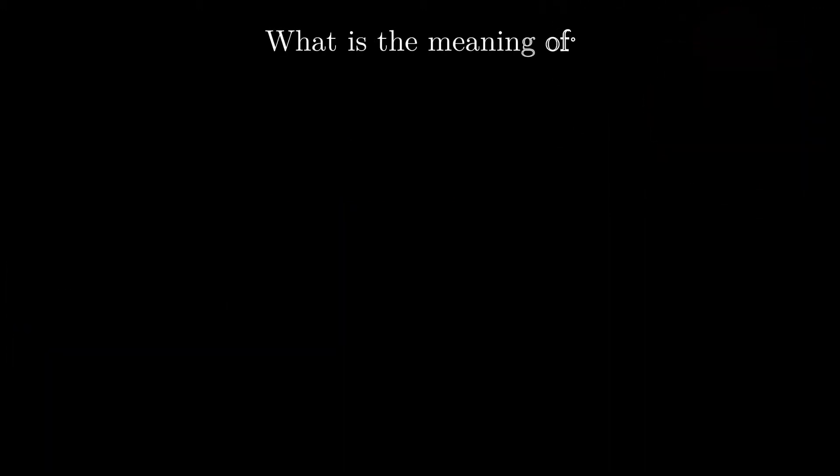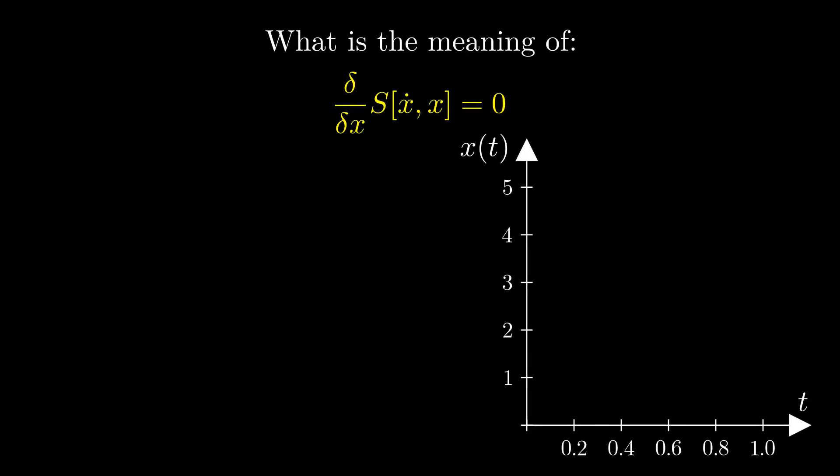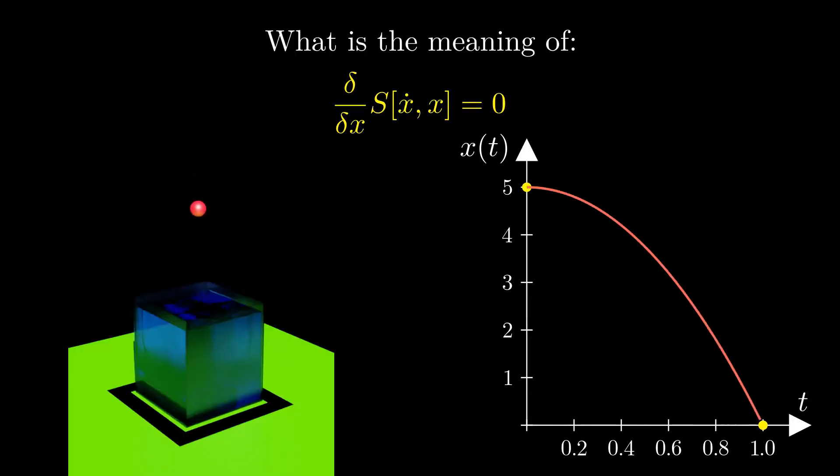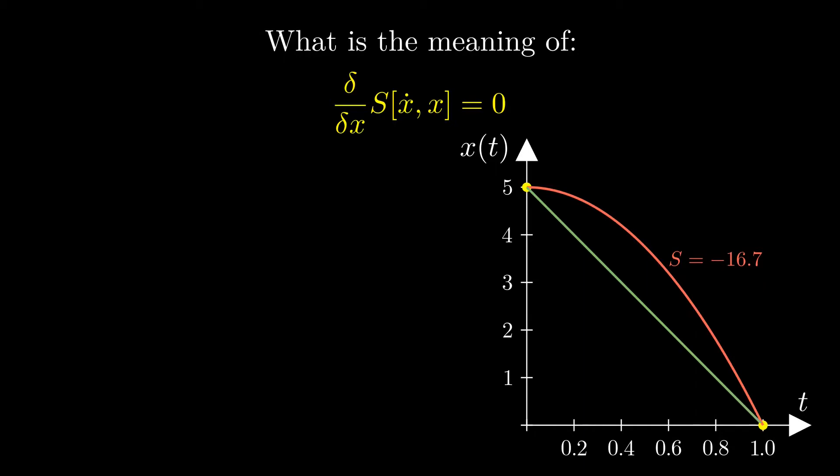In the first video, the variational derivative of an action functional is introduced by analogy to calculus. Let's try to shed a little more light on the meaning of a vanishing variational derivative. We have learned that the action functional S is an integral operator that maps every smooth trajectory between the initial and the final state into a real number. Two different trajectories and their values are shown here for the example of the free fall from a height of 5 meters.